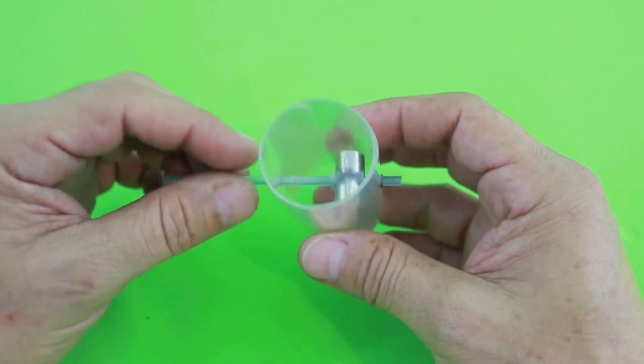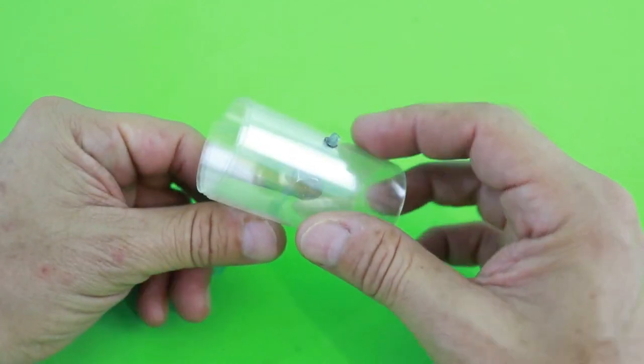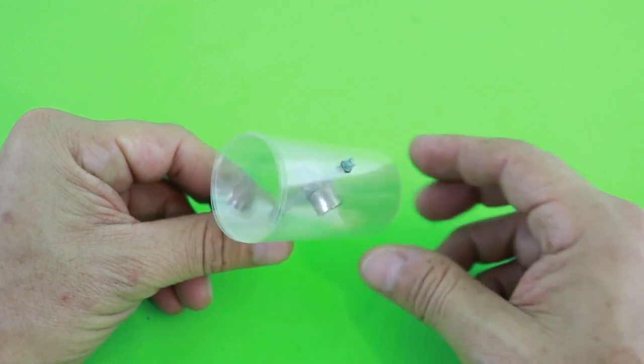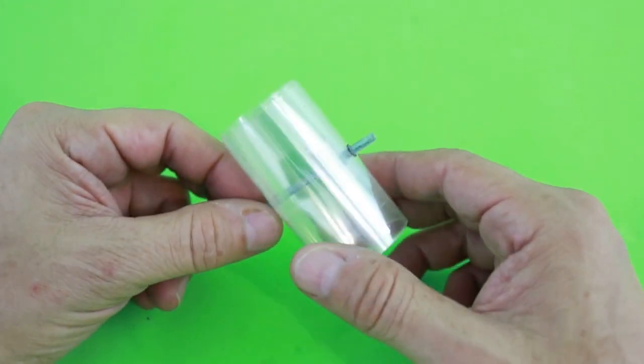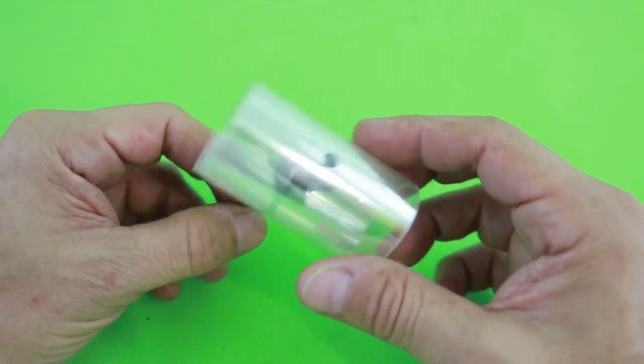After inserting the rotor, you need to glue another piece of tube here to prevent the axis from going out of the hole.